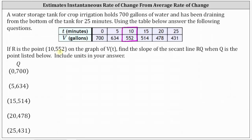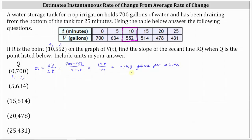Label the ordered pair (10, 552) as T₁, V₁, and label the first point Q as T₂, V₂. The slope M equals the change in volume divided by the change in time. Here, V₂ − V₁ = 700 − 552 = 148, and T₂ − T₁ = 0 − 10 = −10. Simplifying: 148 ÷ (−10) = −14.8 gallons per minute. This is the average flow rate from T = 0 to T = 10 minutes.